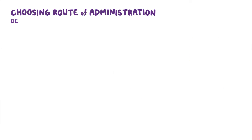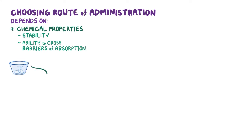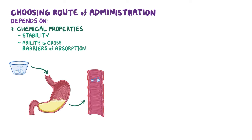Choosing the route of administration depends on many factors. First, these include the chemical properties of the medication itself, such as its stability and its ability to cross certain barriers of absorption. For example, a parorally administered medication needs to be able to resist tough, acidic conditions within the stomach, and then readily pass through the walls of the intestines into the blood.